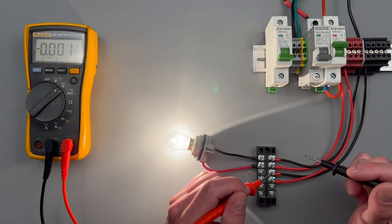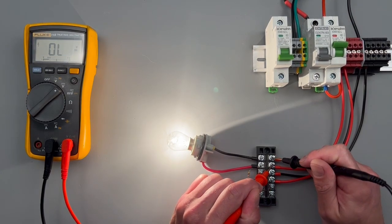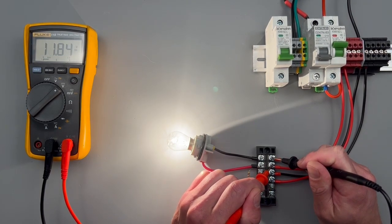Go ahead and do our DC voltage measurement. Notice red to red, black to black, and I'm showing 11.8 volts.